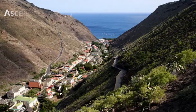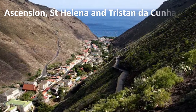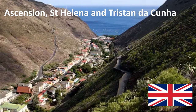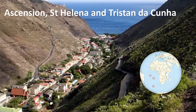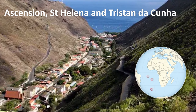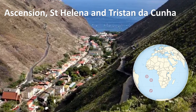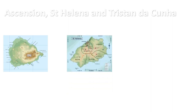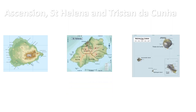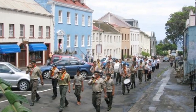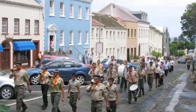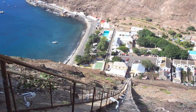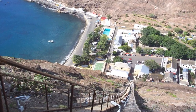Ascension, Saint Helena and Tristan da Cunha is an island territory located in the South Atlantic Ocean, consisting of the island of Saint Helena, Ascension Island and the archipelago of Tristan da Cunha. The population is about 5,300. The capital is Jamestown, but the largest city is Half Tree Hollow.